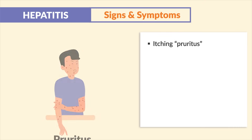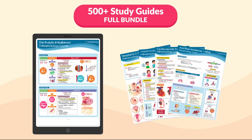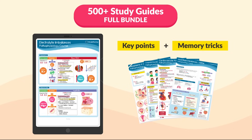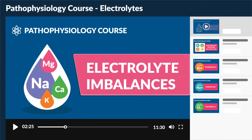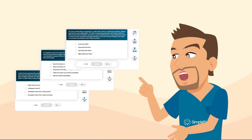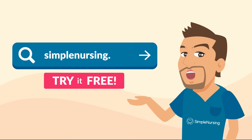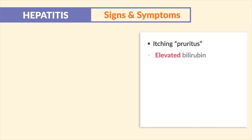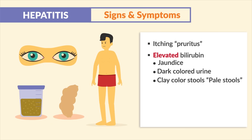For any liver disease, we see itching (pruritus) from bile salts building up under the skin. With elevated bilirubin, we see jaundice — yellowing of the skin and eyes — dark-colored urine, and clay-colored (pale) stools from bilirubin spilling over into the bowels.